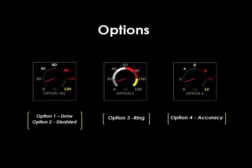There are four options for the analog meter. One draws the meter, two disables it but the appearance is not changed, three creates a ring meter, and four creates an accuracy meter.